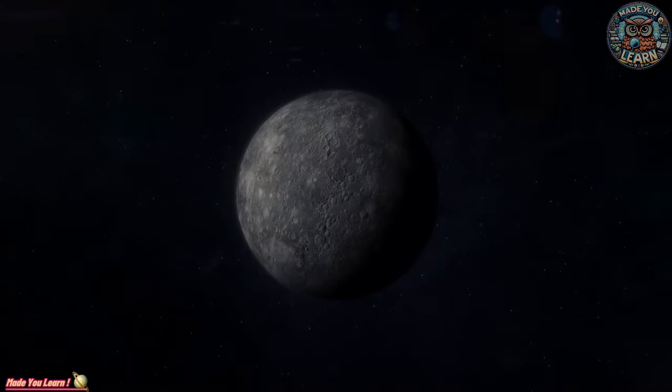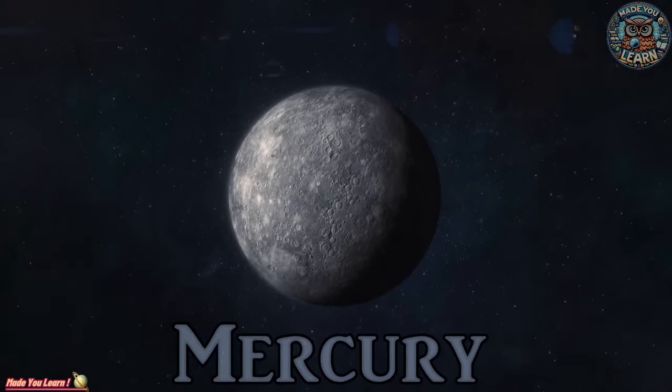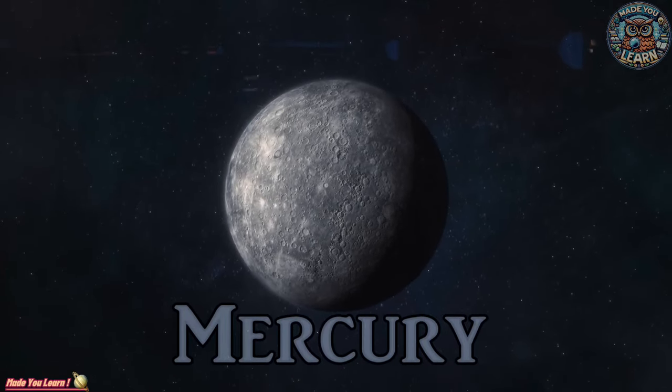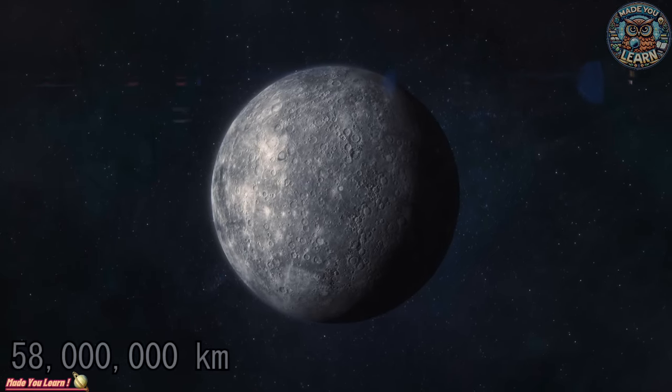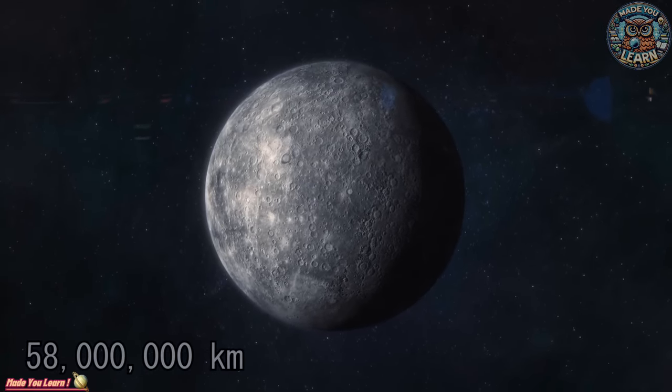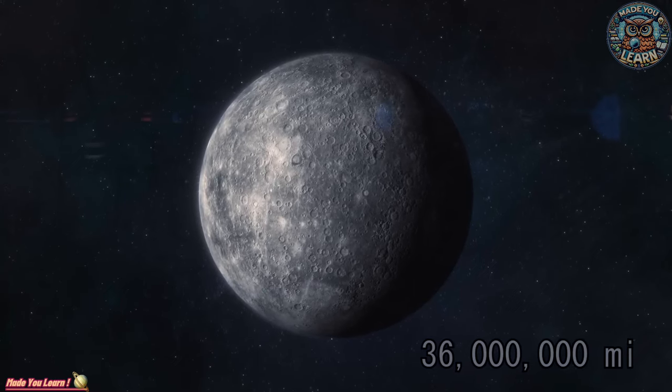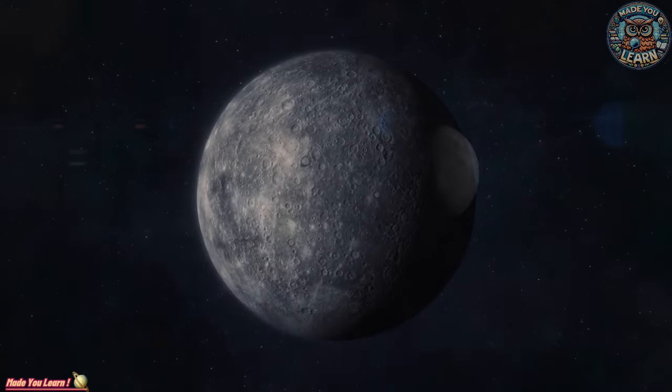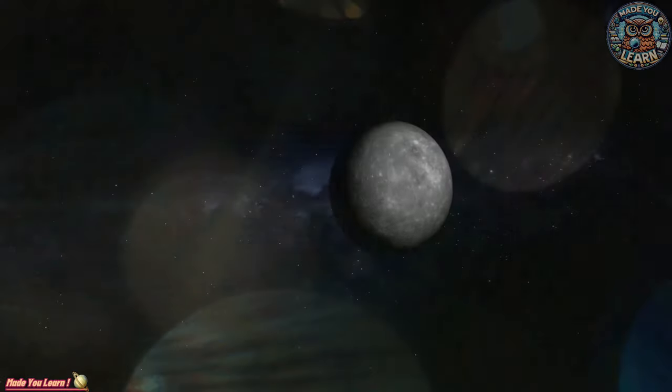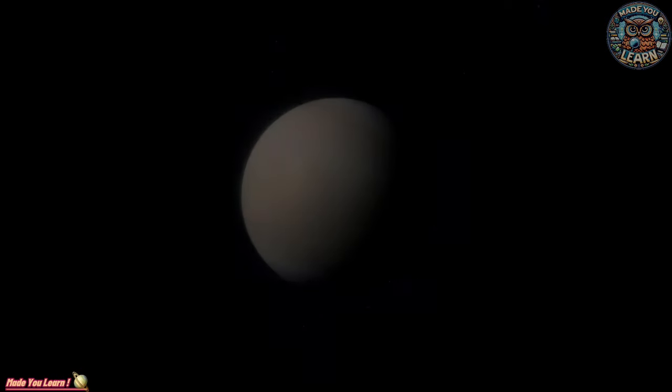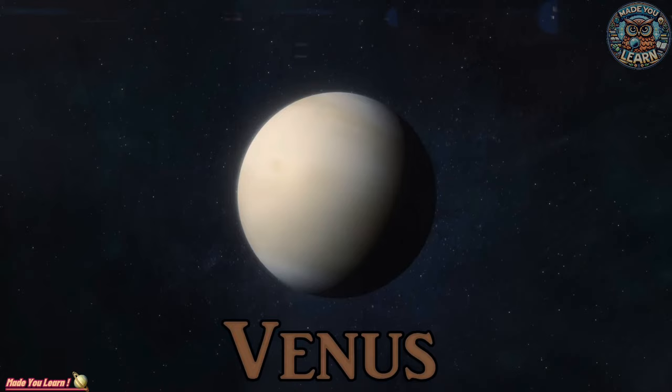Mercury, the closest planet to the Sun, whips around our star in a mere 88 Earth days. This small rocky world is a place of extremes, scorching by day, freezing by night, and pockmarked with craters from cosmic impacts. Despite its proximity to the Sun, Mercury is not the hottest planet. That title goes to Venus due to its thick, greenhouse gas-laden atmosphere.